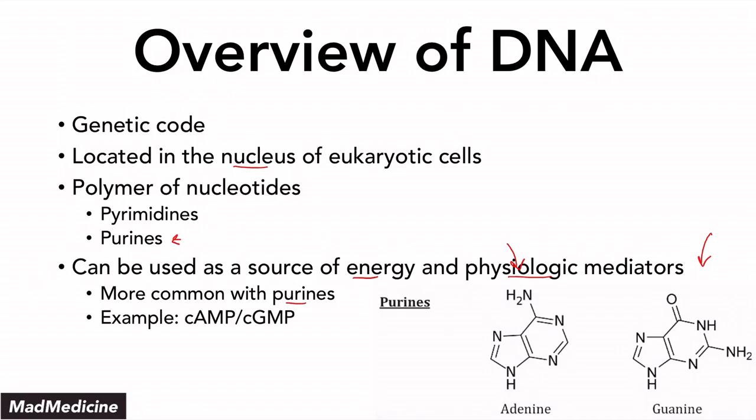For example, you have cyclic AMP and cyclic GMP, which are physiologic mediators. You also have ATP, which is adenosine triphosphate.